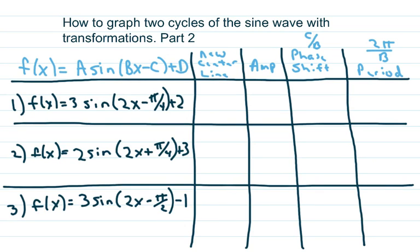Hi everyone. We're going to learn how to graph two cycles of the sine wave, including all the transformations. This is part two. Part one was where our period was just 2 pi. In this case, we're going to have a different period.